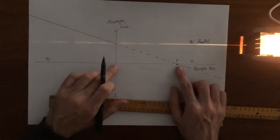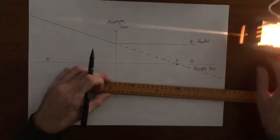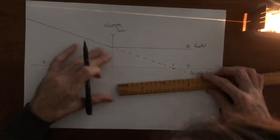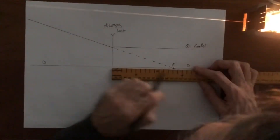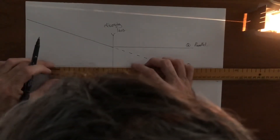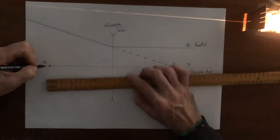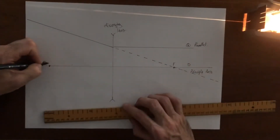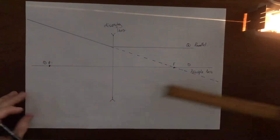So the focal length of this lens is from the lens to that focal point, and we can measure it. This focal length is about 13 centimeters. We can put that focal point here and put another focal point on the other side because the lens is symmetrical.